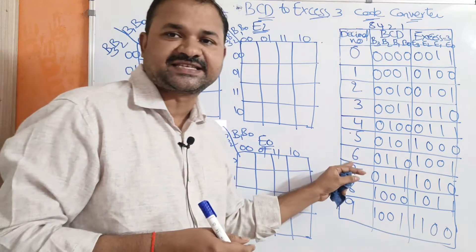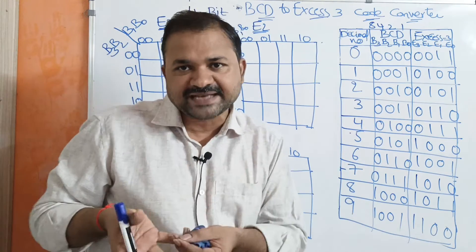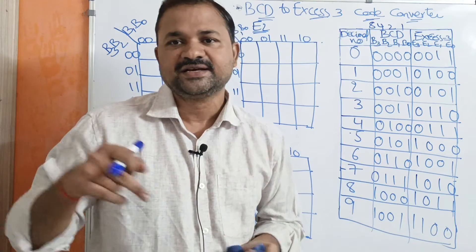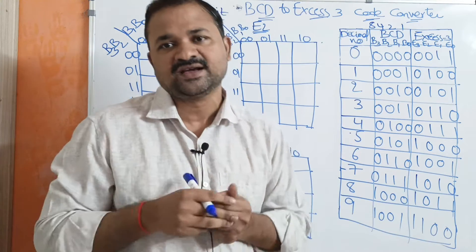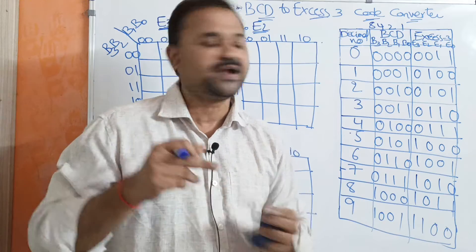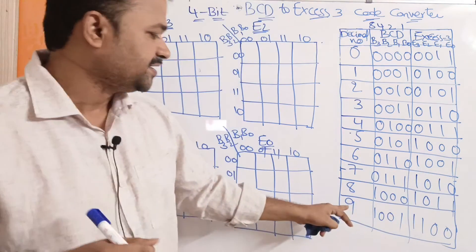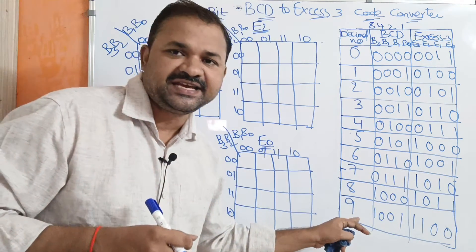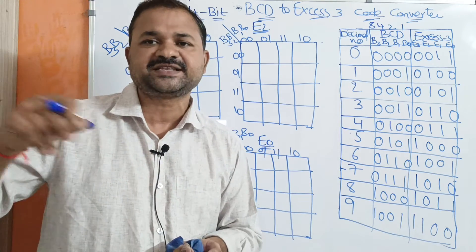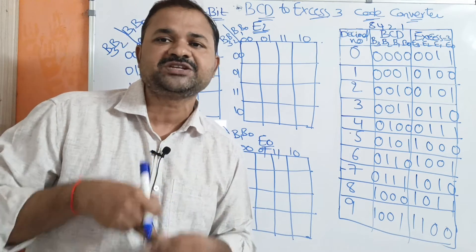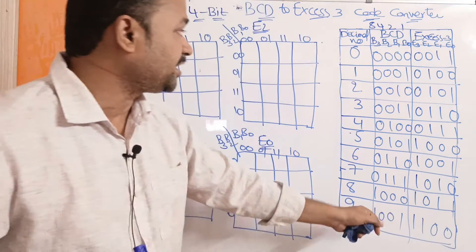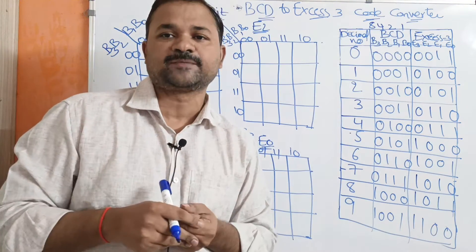Likewise, for 6: 6 plus 3 equals 9, represented as 1001 in 8421 notation. For 9: 9 plus 3 equals 12, represented as 1100. So the truth table is complete.